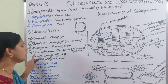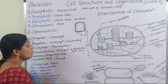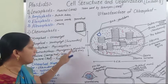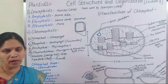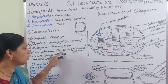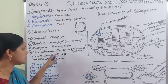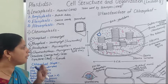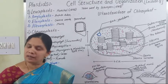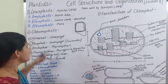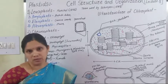The next type is Chromatophores. In Chromatophores, fucoxanthin and phycobilins are present. Due to the presence of these fucoxanthin and phycobilins, Chromatophores give a light blue color. This is all about the different types of Chromoplasts.